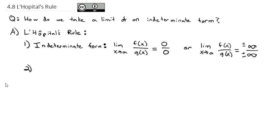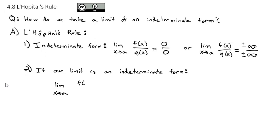If our limit is an indeterminate form, it can be shown that the limit as x goes to a of f(x)/g(x) is equal to the same limit of f′(x)/g′(x). Often, this second limit is much easier to take. In other words, if we have a fraction in an indeterminate form, we just take the derivative of the numerator and the derivative of the denominator, and then calculate that limit.